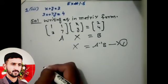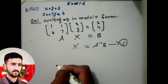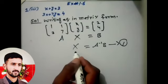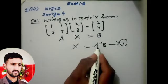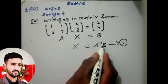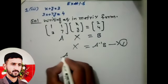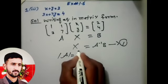First, we find X equals A inverse B. So first of all, for the inverse, we need a determinant.